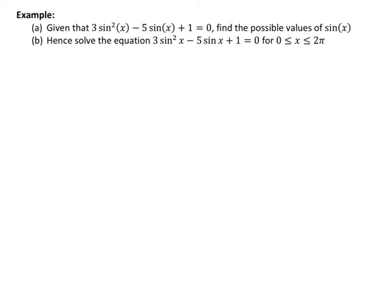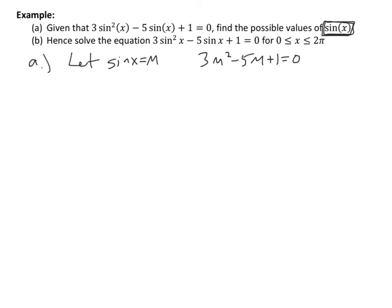This next problem is in two parts, similar to what you'd see on an IB exam. Part A: given 3 sine² x minus 5 sine x plus 1 equals 0, find the possible values of sine x. When they ask this, they want you to figure out what sine x must equal without doing the inverse sine step. If we let m equal sine x, we can rewrite the equation as 3m² minus 5m plus 1 equals 0, which we can solve by factoring, completing the square, or the quadratic formula.